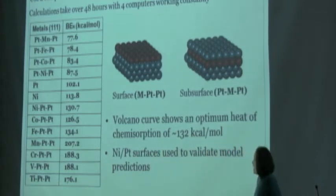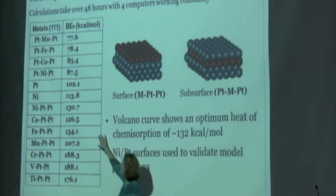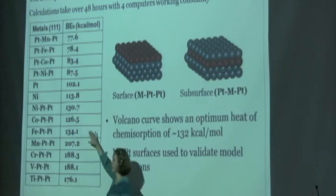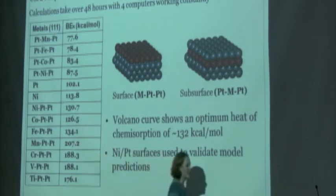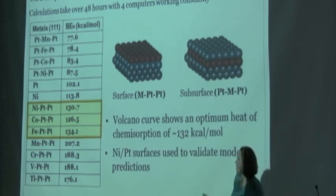On that volcano curve you saw that we wanted a value of around 132 kcal/mol. Looking at these values over here, you can see that some of the values are very close to that peak of the volcano curve. These three in particular are in that optimal range.